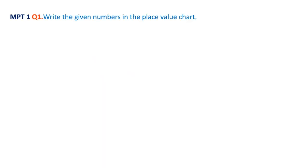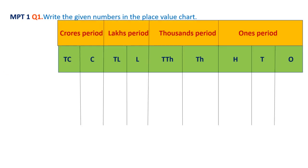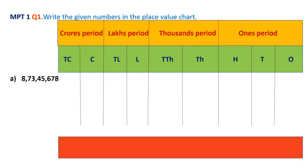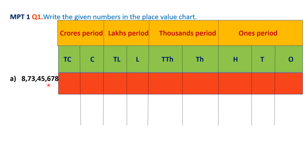Let us write 8,73,45,678 in the place value chart. Once the commas are placed it is easy to read: 678 is in ones period, 45 is in thousands period, 73 is in lakhs period, and 8 is in crores period. Placing values from right: 8 at ones, 7 at tens, 6 at hundreds, 5 at thousands, 4 at ten-thousands, 3 at lakhs, 7 at ten-lakhs, 8 at crores.